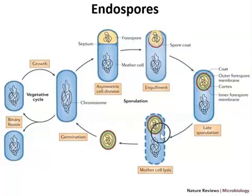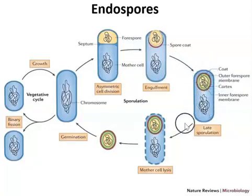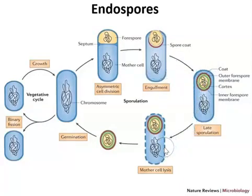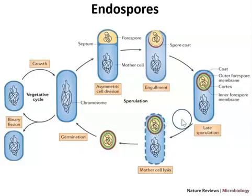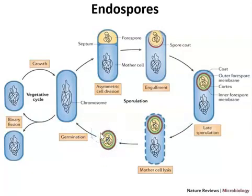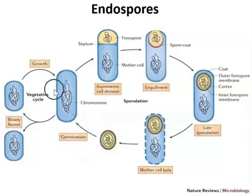During sporulation, there is a forming endospore surrounded by the sporangium, the mother cell. The stages where the sporangium is still intact are the easiest to view because the sporangium will be a different color from the spore. The last stage is where no sporangium remains — only the spore, essentially a hibernating cell. When conditions become optimal again, it will germinate and become vegetative.